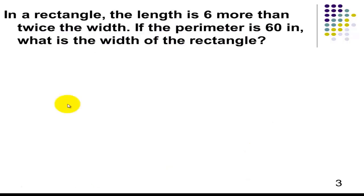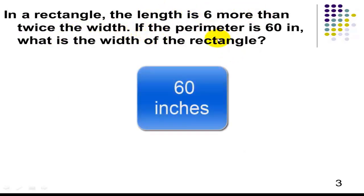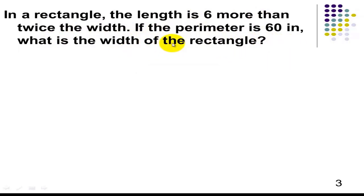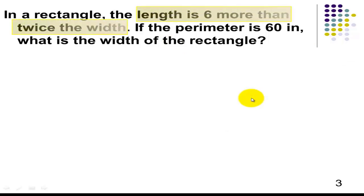Let's have our first example. Given a rectangle, the length is 6 more than twice the width. If the perimeter is 60 inches, what is the width of the rectangle? First, I need you to highlight the things that we need. We have the length is 6 more than twice the width, and the perimeter is 60 inches.